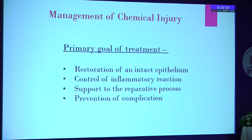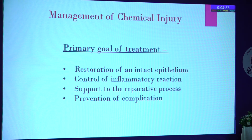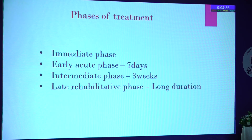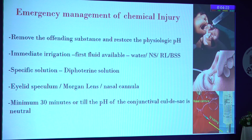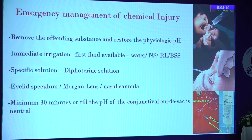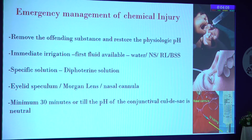When it comes to managing chemical injury, the idea is to restore the epithelium, control the inflammatory process, support the reparative process, and prevent complications. We treat the patient in different phases — seven days, three weeks — though these timelines are classical teaching and can differ. This is an emergency situation, and the emergency management must be completely clear. The first idea is to remove the offending substance and restore the physiological pH with the first fluid available.